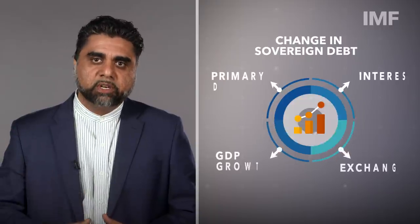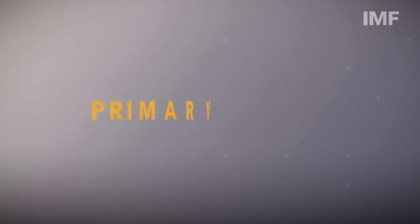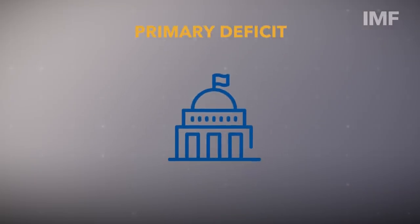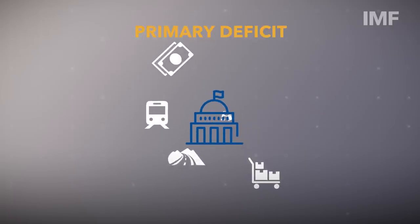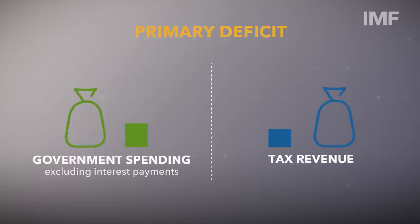On a global scale, sovereign debt ratios have been on a rising trend for some time. We can break down this rise in debt and forecast what it will look like in the future by looking at four main drivers. The first is the primary deficit — this is the amount a government spends on salaries, on goods and services, etc., that is in excess of what it collects in taxes.